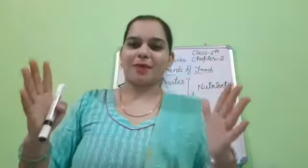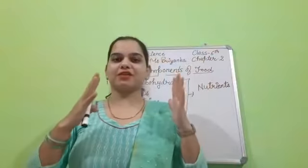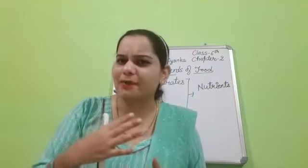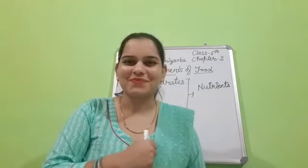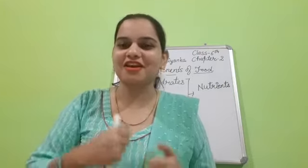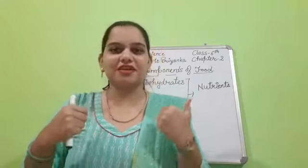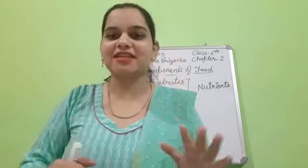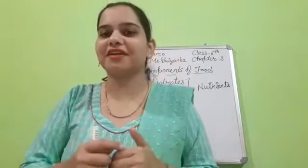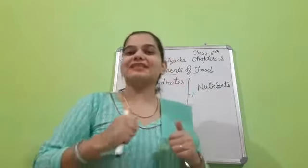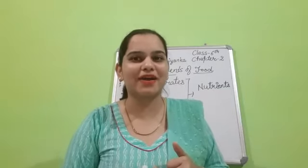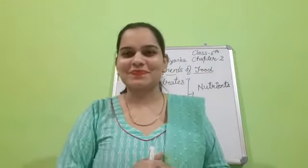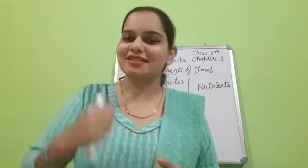Now we will start carbohydrates. Carbohydrates are called energy giving food. What are carbohydrates called? Energy giving food. Yes, energy giving food or energy giving compounds. The bulk of our food consists of carbohydrates and the two types of carbohydrates are sugar and starches. How many types of carbohydrates? Two. What are those? Sugar and starches. Yes, sugar and starches.